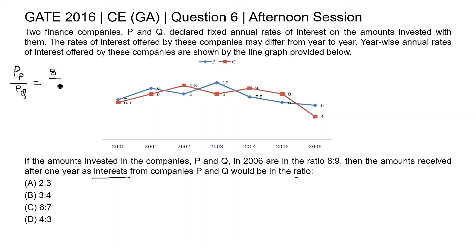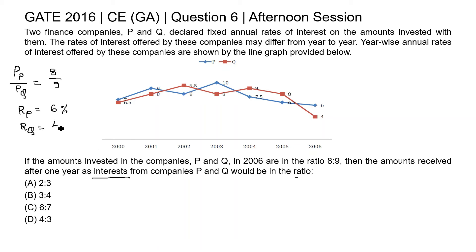This is for year 2006. For 2006, the rate of interest for P is given as 6 percent, and the rate of interest for Q is given as 4 percent.